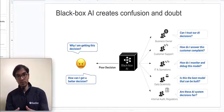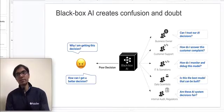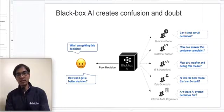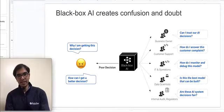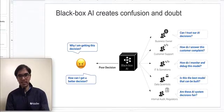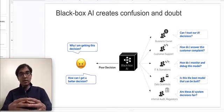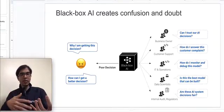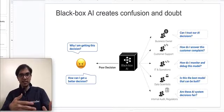The first stakeholder is the business owner — for instance, the head of lending in a bank — who worries about whether they can trust the model's decisions and how the model would behave during a recession. The customer support agent worries about how to respond to customer complaints and how to explain why the model made certain decisions. IT and operations people ask how to monitor models in production and what checks and safeguards to put in place. Data scientists worry about iterating on the model — understanding its blind spots and weaknesses so they can fix them in the next iteration. And finally, regulators and auditors worry about whether the model is fair, unbiased, and compliant with local legislation.